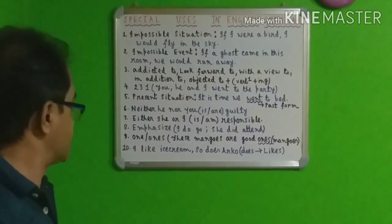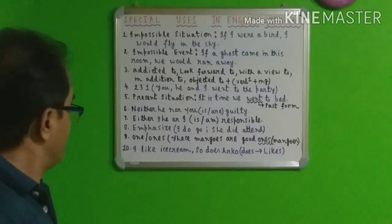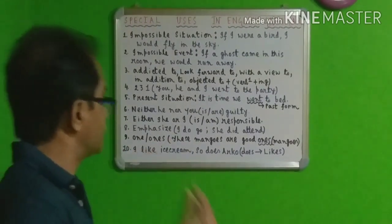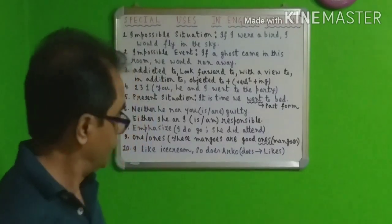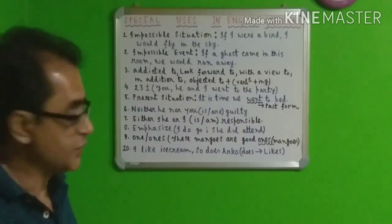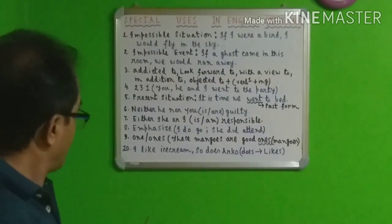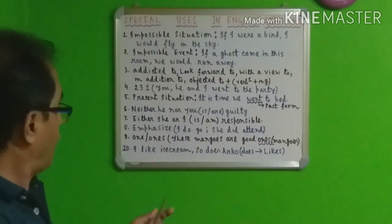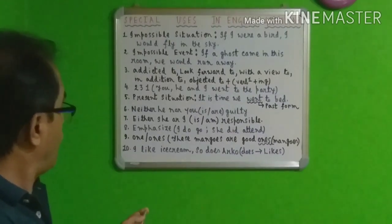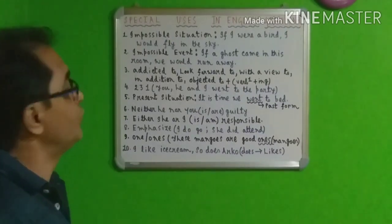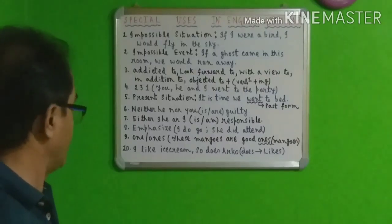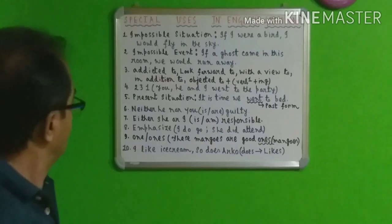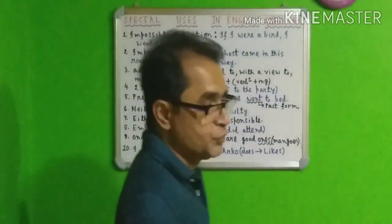Number ten: suppose the sentence is 'I like ice cream and Orku also likes it.' We can also say: 'I like ice cream, so does Orku.' Here 'does' refers to 'likes.' If the sentence is reversed — 'Orku likes ice cream, so do I' — 'do' refers to 'likes.' So 'do' and 'does' work as substitutes for 'like' and 'likes' respectively.